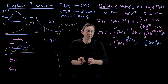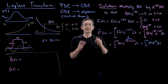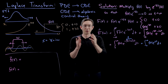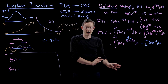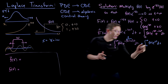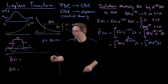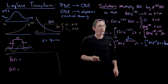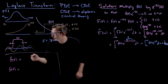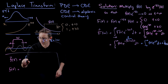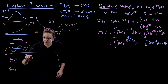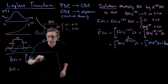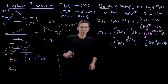Grouping those exponentials gives the integral from zero to infinity of f of t times e to the minus (gamma plus i omega) t dt. I define the Laplace variable s equals gamma plus i omega, so this equals the integral from zero to infinity of f of t times e to the minus s t dt. That is the definition of the Laplace transform — f bar of s equals the integral from zero to infinity of f of t times e to the minus s t dt. The Laplace transform is the Fourier transform of a one-sided, weighted function: a one-sided weighted Fourier transform.